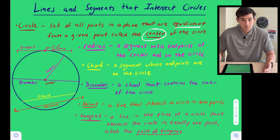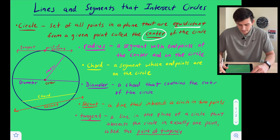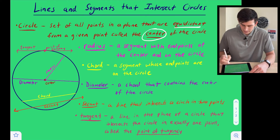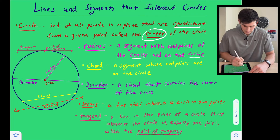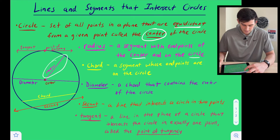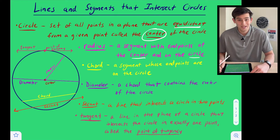Now we're going to talk about the radius. The radius is a segment with endpoints at the center and on the circle — so at the center and on the circle. Here's our radius, the pink segment there.